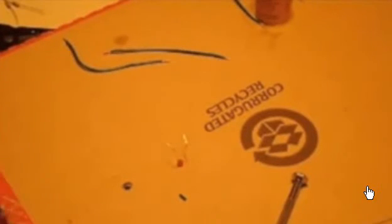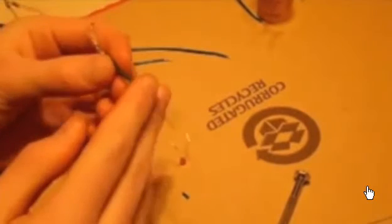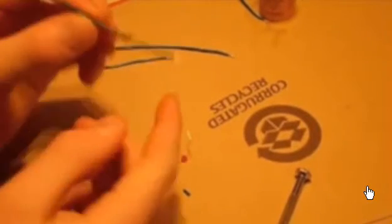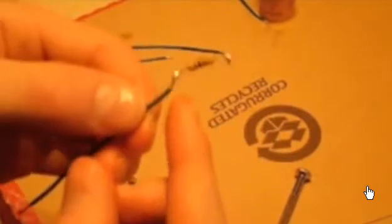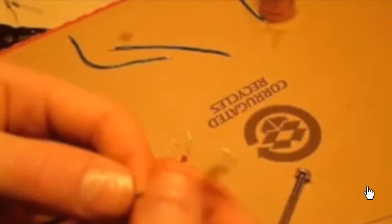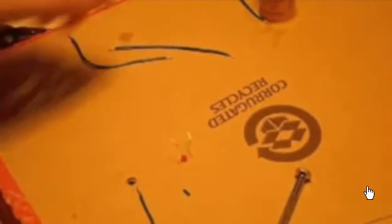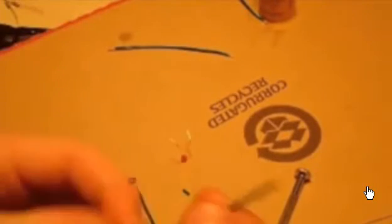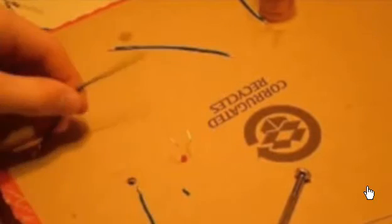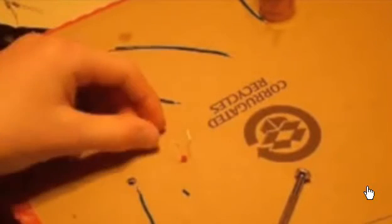Alright guys, to get started, what you're going to need to do is take some wire, cut it, and strip it about 3 inches long, maybe 4 inches. Then add a resistor and solder the resistor to the end of it. Take another piece of wire, cut it about 3 to 4 inches long, and strip it.